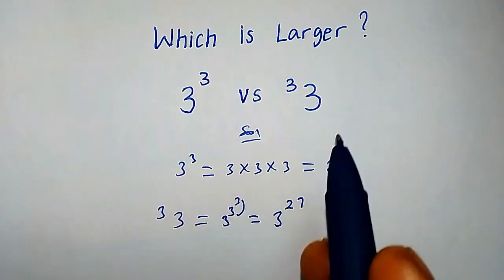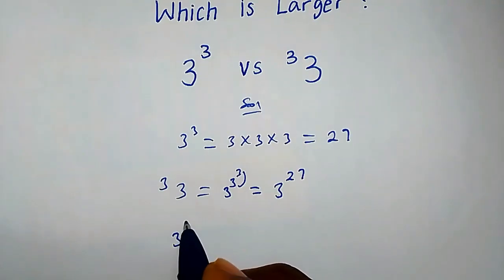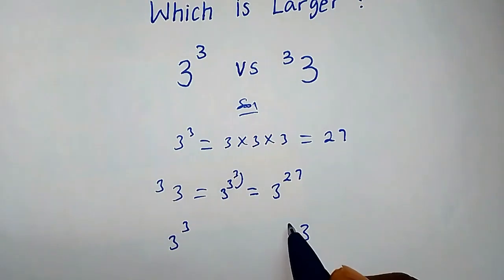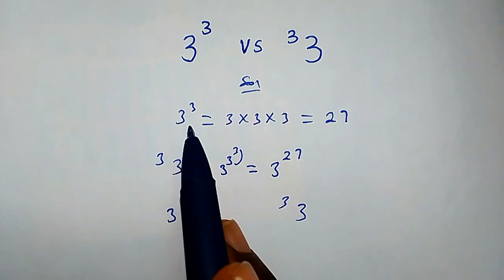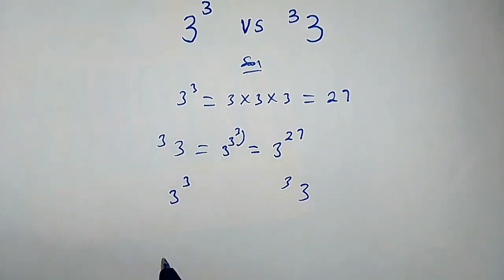Now back to our question: we have 3 raised by 3 and also 3 to the super power of 3. We obtain 3 raised by 3 equals 27, so we have 27 here.